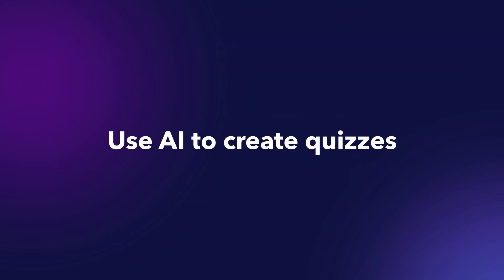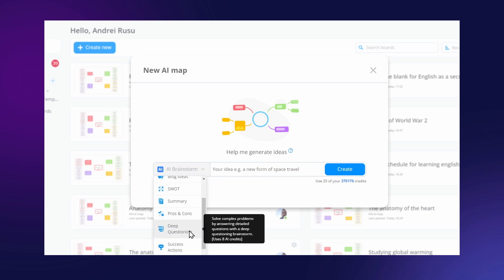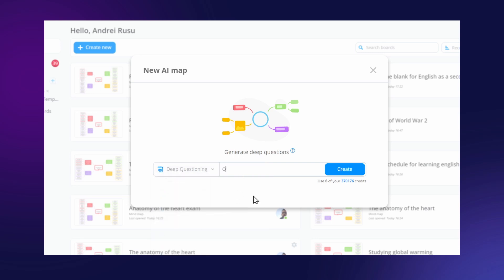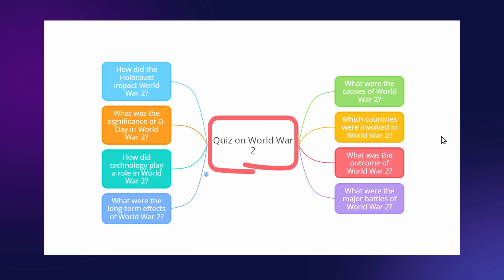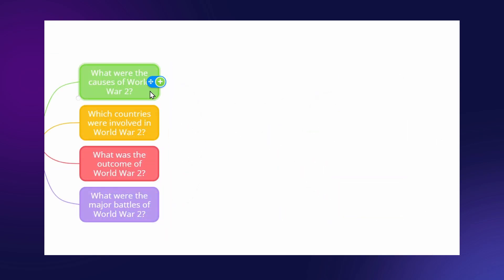You can even use the AI to create a quiz. Select deep questioning as the AI mode, type in your prompt, and you'll get a colorful Mind Map with questions that you can answer. Or call the AI for more explanations if you're not sure.